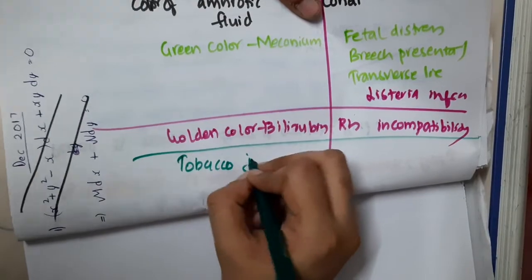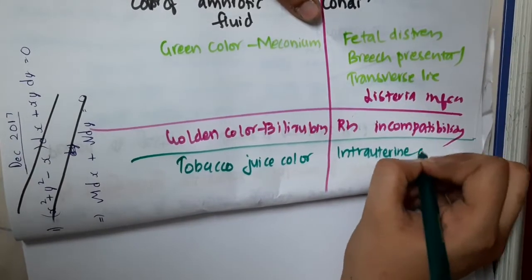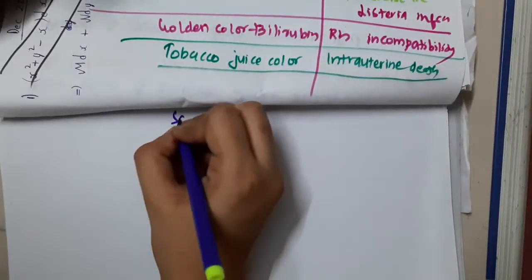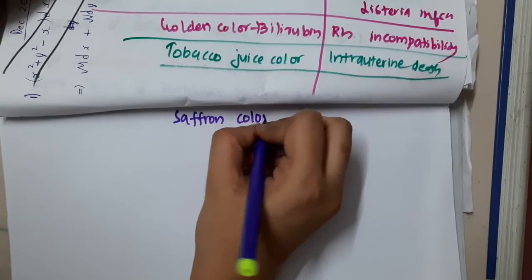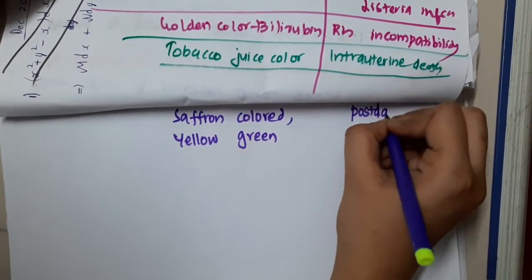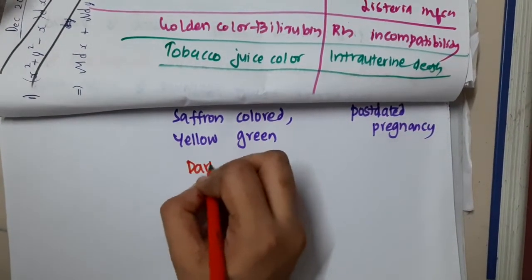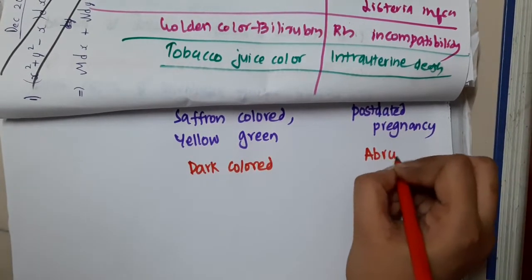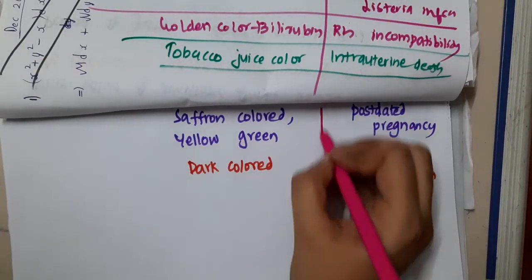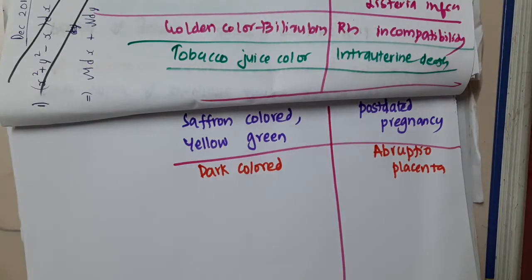Tobacco juice colored amniotic fluid is seen in intrauterine death. Saffron colored or yellow-green colored amniotic fluid is seen in post-dated pregnancy. Dark colored amniotic fluid is seen in abruptio placenta. These are the different colors and conditions of amniotic fluid.